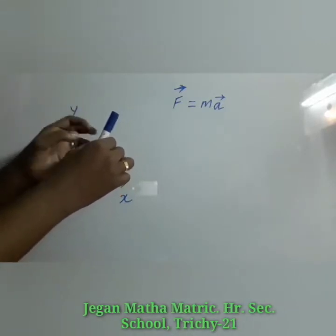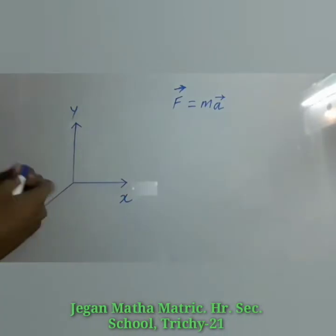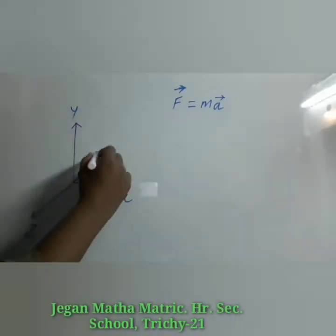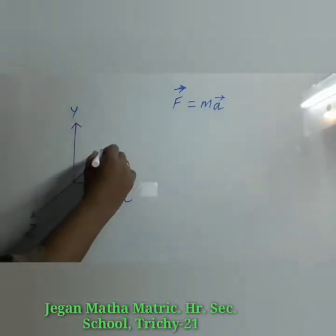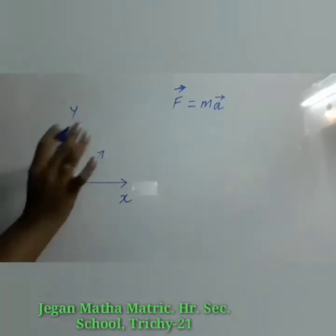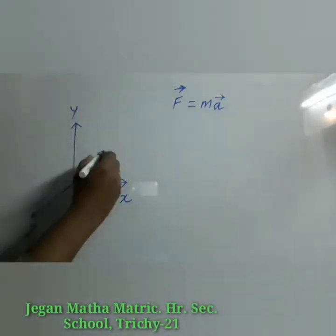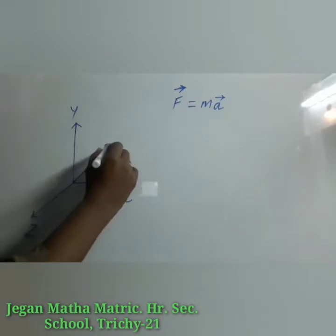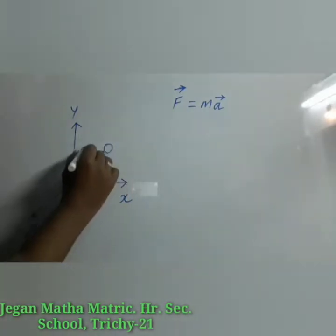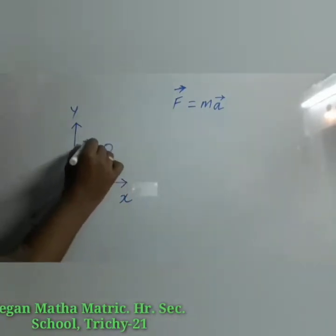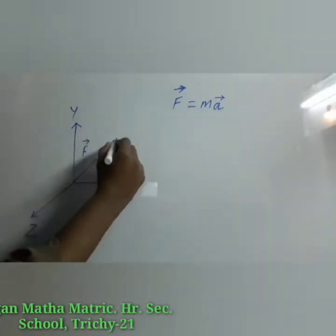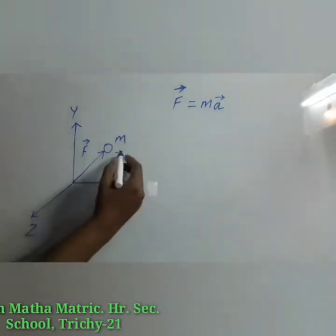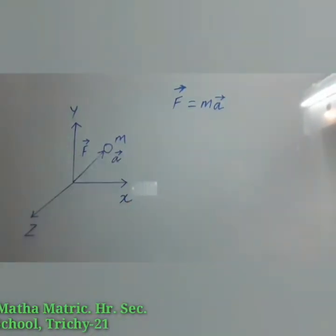For our convenience, let us take and imagine how an object moves three-dimensionally. So on that object F vector is acting, the mass of the object is m, and the acceleration of the object is given by the letter a vector.